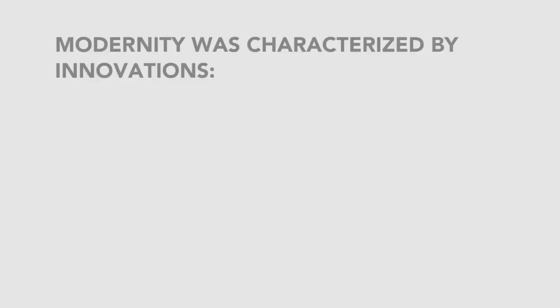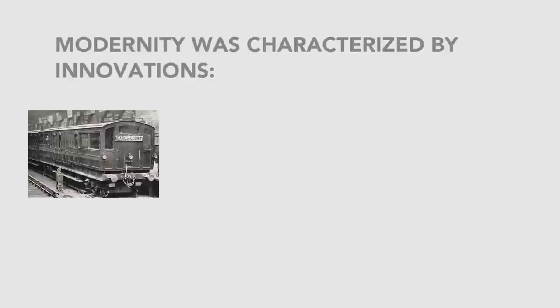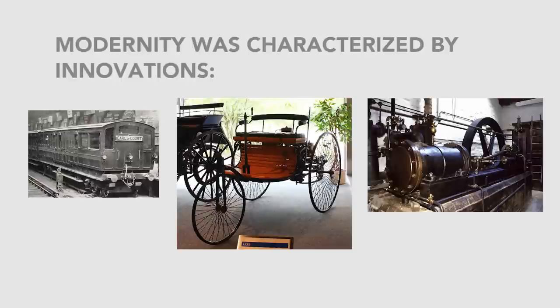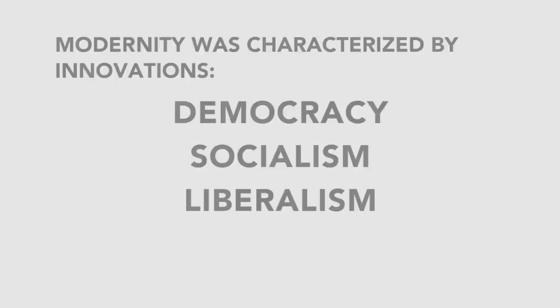When we talk about the late 19th, early 20th century Europe, you can say that modernity was characterized by innovations that include technologies such as the railroad, automobile, and coal engines, as well as ideologies such as democracy, socialism, and liberalism.